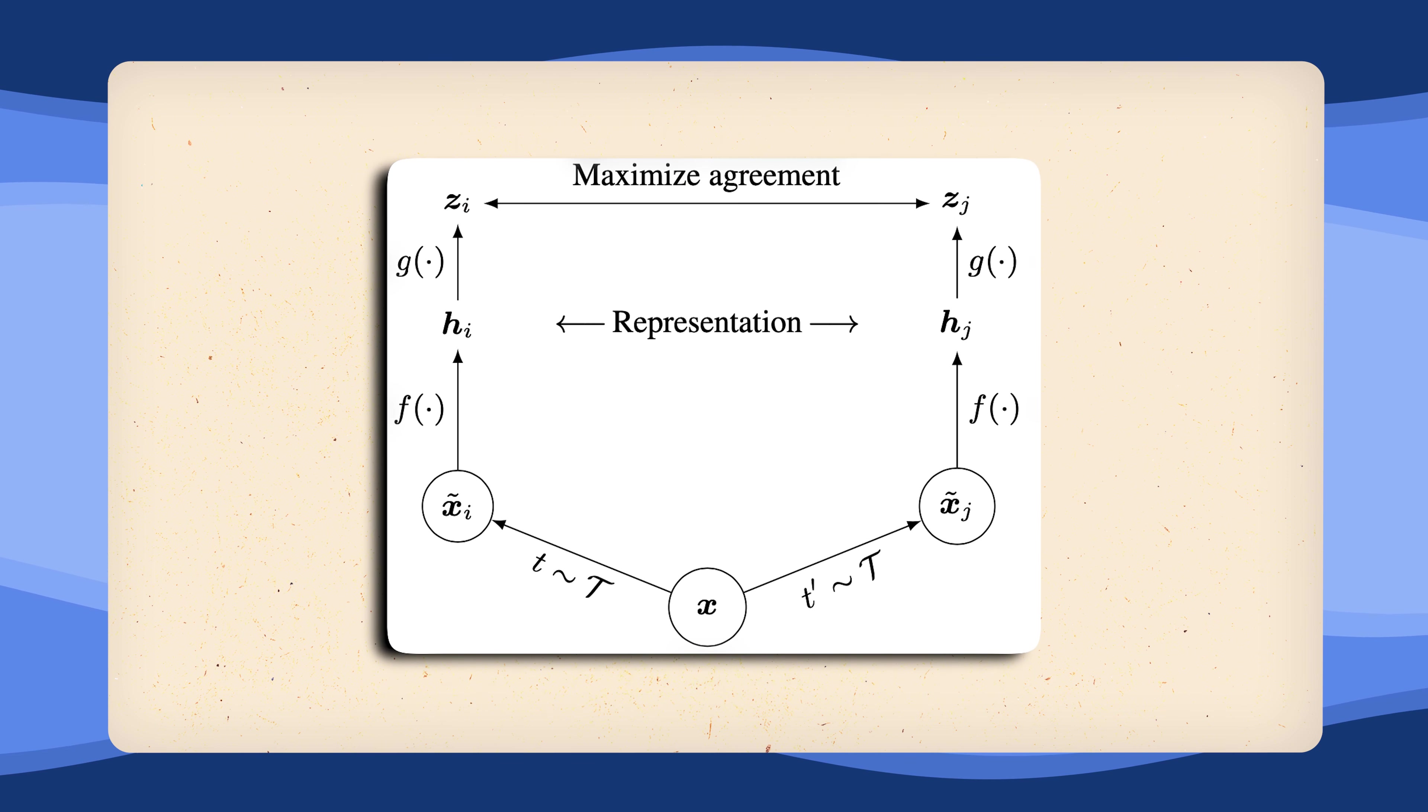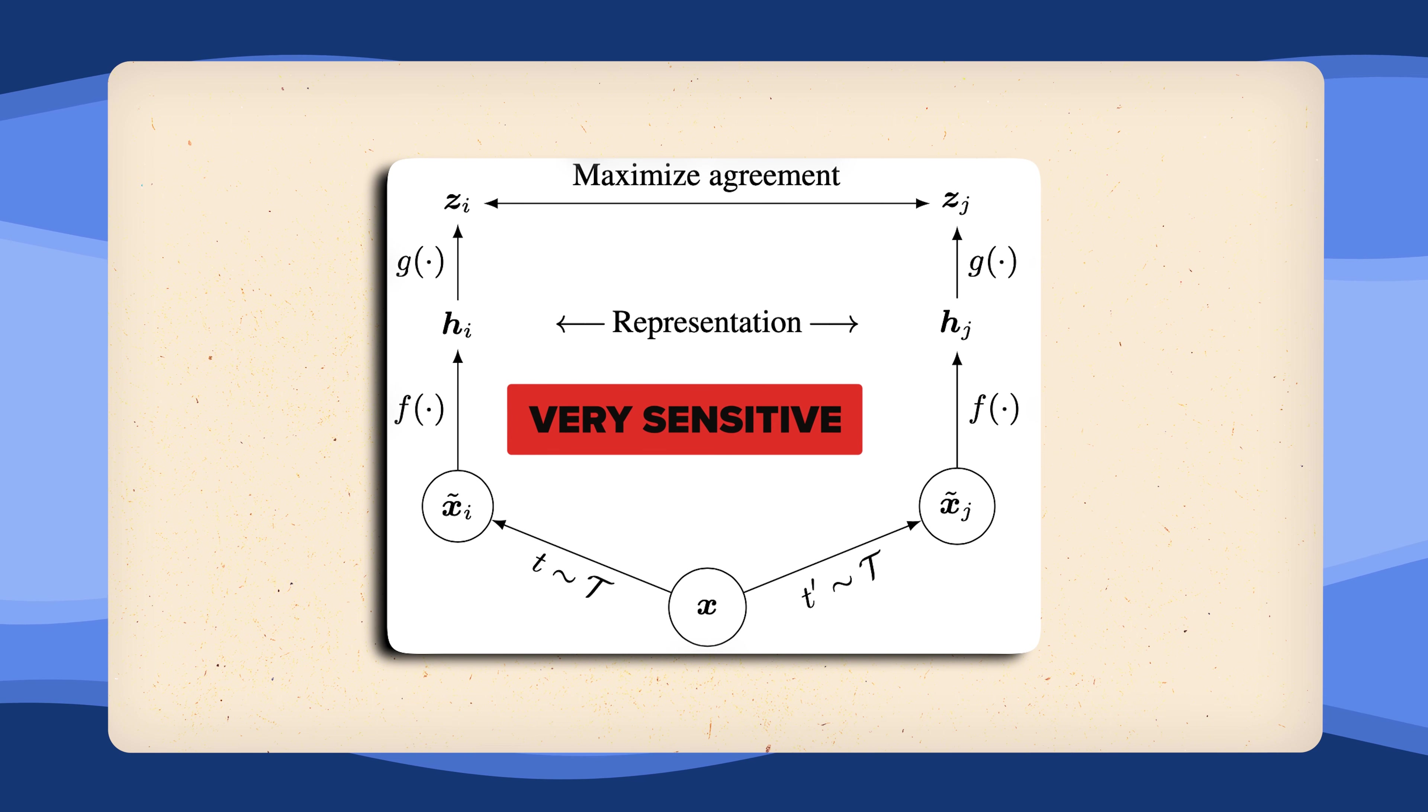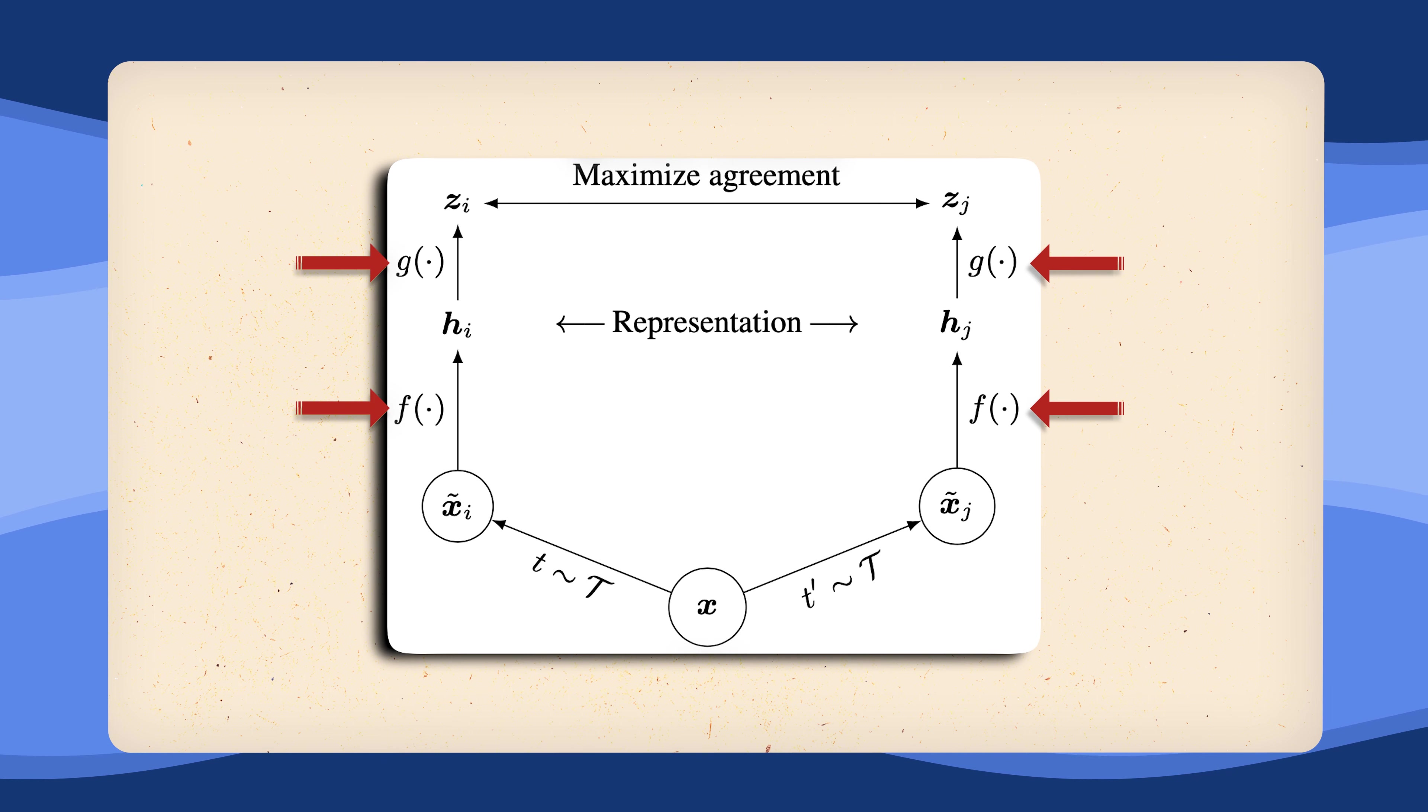This base idea is very sensitive and getting it to actually work requires specific care. You might have already asked yourself why there are two functions, f of x and g of x. f of x is the neural network that produces the hidden representations we want to use for our downstream task.